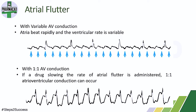The next type is atrial flutter. The difference here is that the atria contract regularly and properly, but the heart rate is faster. In atrial flutter with variable AV conduction, atrial contraction is increased but the ventricle no longer contracts at the same rate — so the ratio of atrial to ventricular contraction is 2:1, not 1:1.